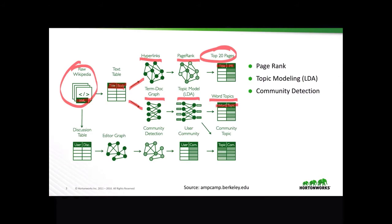We can also take the raw Wikipedia text and create a discussion table with a user and a corresponding discussion. From there, it's easy to create an editor graph and apply the community detection algorithm. This gives us a user community table with a user and a corresponding community.